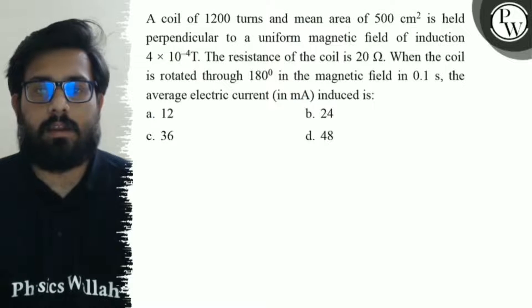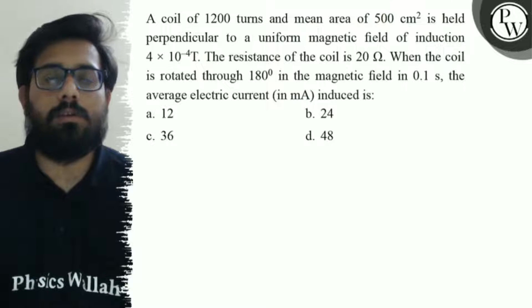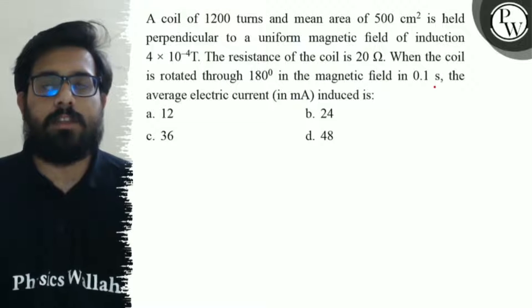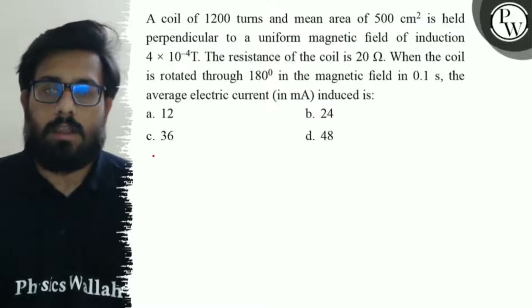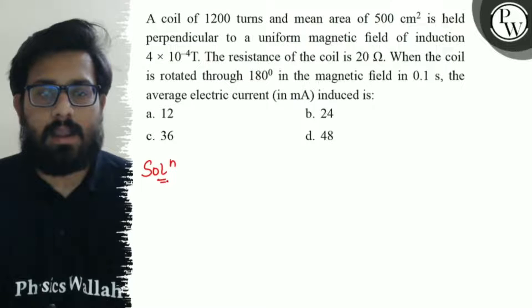...the average electric current in milliampere induced is: first option is 12, second option is 24, third option is 36, and fourth option is 48. So in this question, what are the given data?